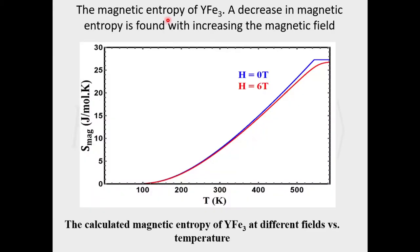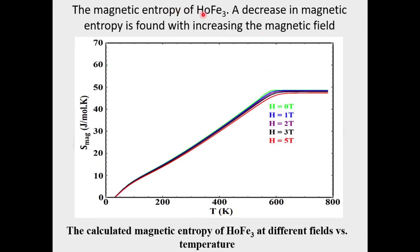The results of entropy. The magnetic entropy of yttrium iron-3 shows a decrease in magnetic entropy with increasing magnetic field, as shown in the figure.